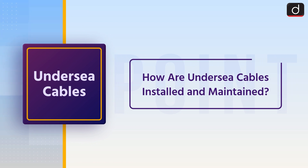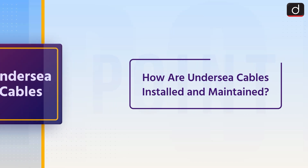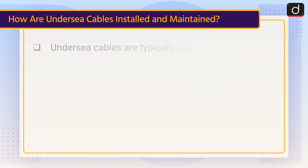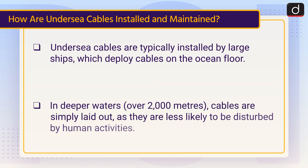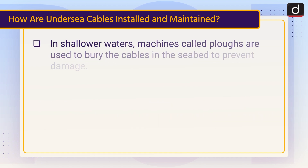Now lastly, how are undersea cables installed and maintained? Undersea cables are typically installed by large ships, which deploy cables on the ocean floor. In deeper waters, over 2000 metres, cables are simply laid out as they are less likely to be disturbed by human activities. In shallower waters, machines called plows are used to bury the cables in the seabed to prevent damage.